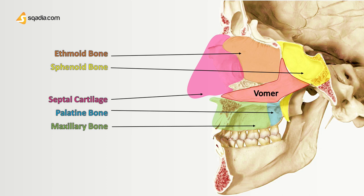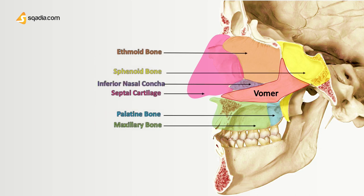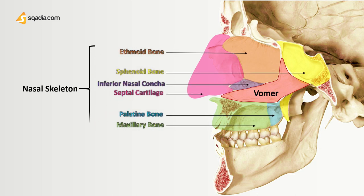On the posterior inferior side, it articulates with the septal cartilage of the nose to make the nasal septum, along with the inferior nasal conchae. Hence, along with cartilage, it divides the nasal cavity into two parts. The nasal septum along with the nasal cartilage makes the whole nasal skeleton that we can see as the external nose and internal septum.